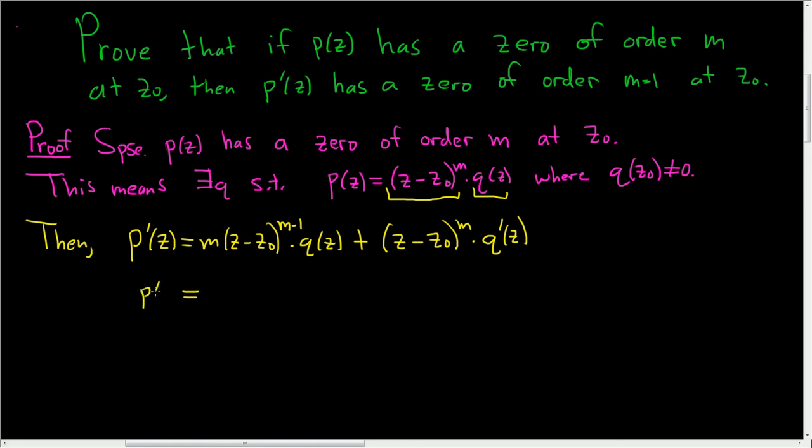This can be rewritten. So we have p prime of z. We should be able to factor out something. Let's take out z minus z naught to the m minus 1. Because that's what we want to factor out, right?